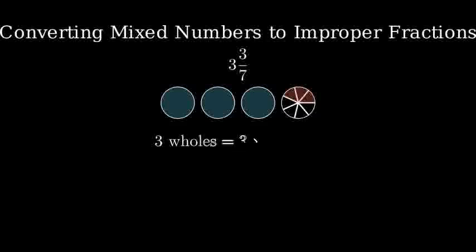Each whole unit contains 7 sevenths. So 3 whole units contain 21 sevenths. Plus the additional 3 sevenths gives us 24 sevenths total.